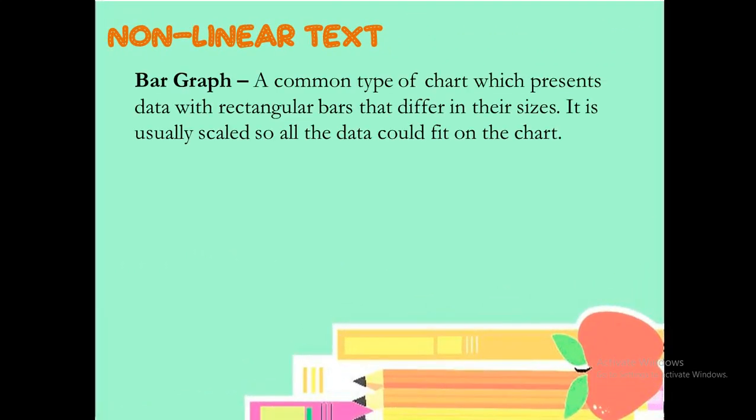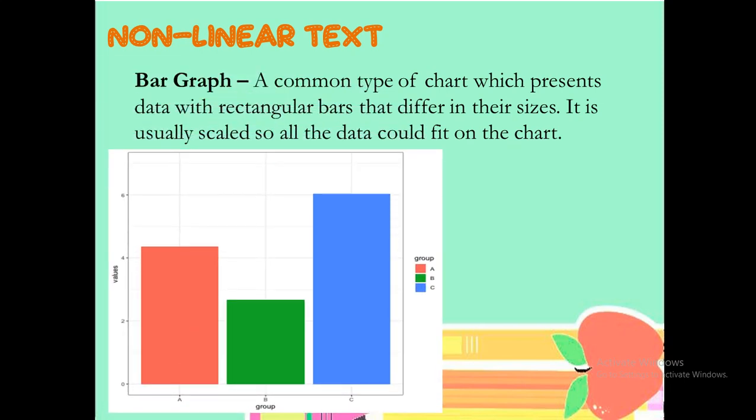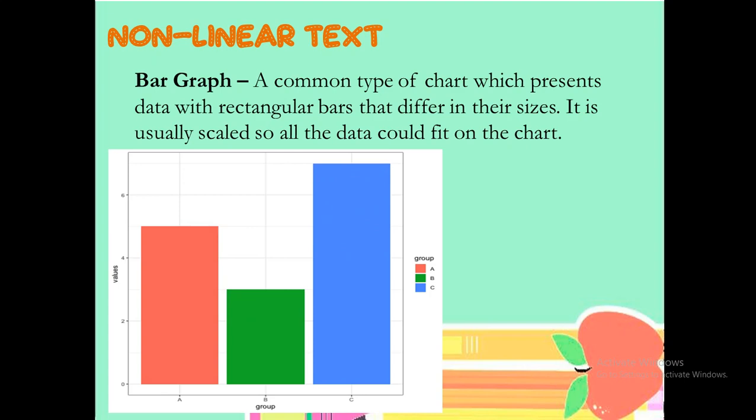Another example of non-linear texts would be the bar graph. Bar graph would be very familiar in terms of the usage in economics, in science, and mathematics. Bar graph is a common type of chart which presents data with rectangular bars that differ in their sizes. It is usually scaled so all the data could fit on the chart.